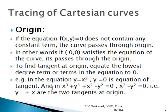For example, in y = x², the lowest degree term is y = 0, which is the tangent equation. In x³ + y³ + x² − y² = 0, the lowest degree term gives x² − y² = 0, that is y = ±x as two tangents to the curve at the origin. So it is simple to find tangents at the origin.